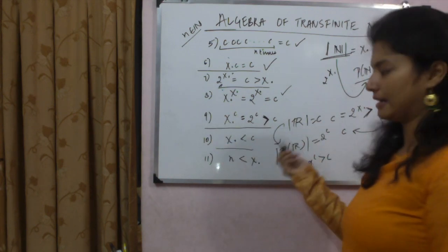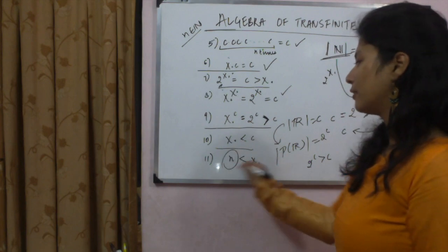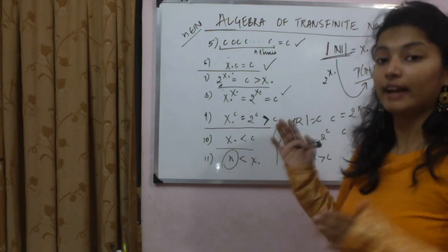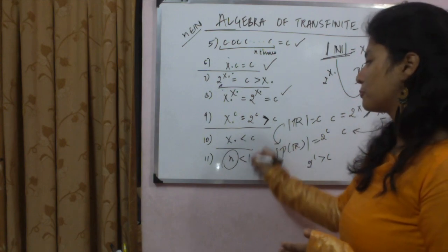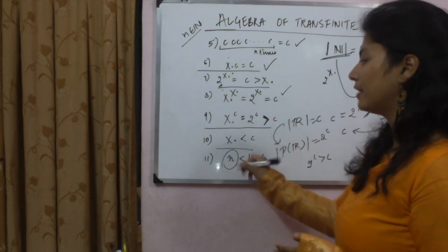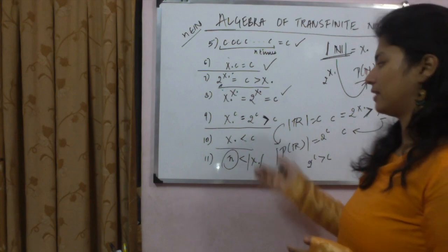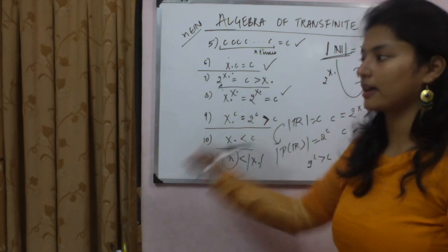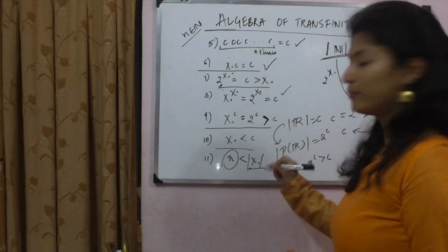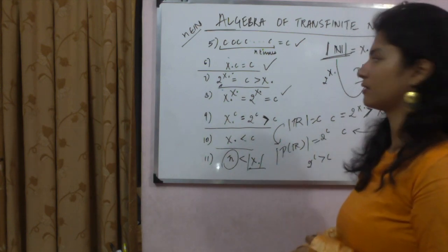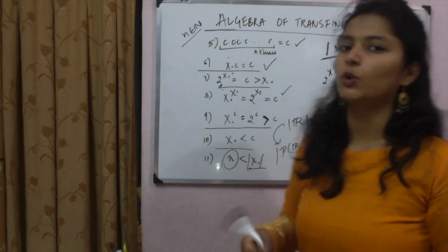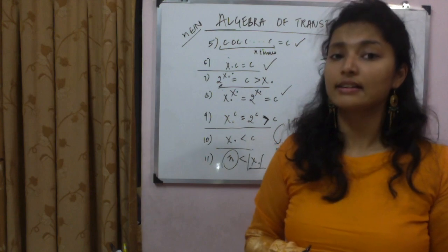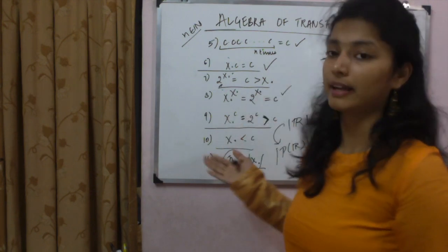So in summary: finite natural numbers are smaller than ℵ₀, and ℵ₀ is smaller than c, since ℵ₀ represents the infinite natural numbers. Any finite number, no matter how large — 100 billion — is still finite and countable, while ℵ₀ represents an infinite set. Today we learned about transfinite numbers, their algebra, and how to deal with exponential operations on them.